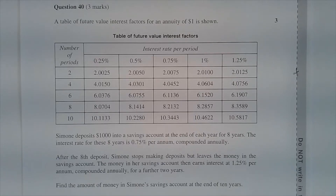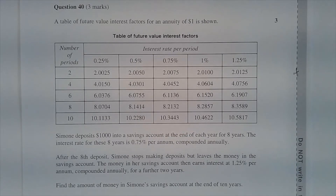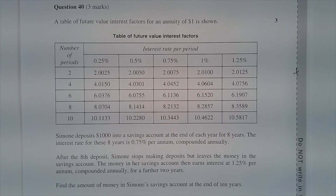Question 40. A table of future value interest factors for an annuity of $1 is shown. Simone deposits $1,000 into a savings account at the end of each year for 8 years. The interest rate for these 8 years is 0.75% per annum, compounded annually.